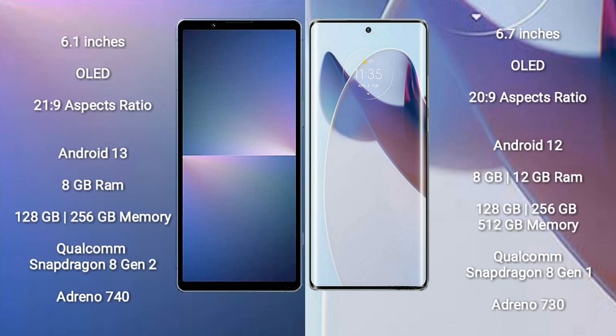The Sony Xperia 5 Mark V comes with 8GB RAM and 128GB or 256GB internal storage, a Qualcomm Snapdragon 8 Gen 2 processor, and an Adreno 740 GPU. The Motorola Moto X30 Pro comes with 8GB or 12GB RAM and 128GB, 256GB, or 512GB internal storage, a Qualcomm Snapdragon 8 Gen 1 processor, and an Adreno 730 GPU.